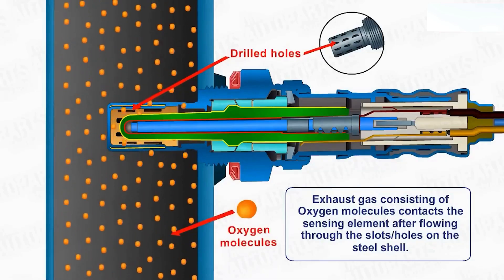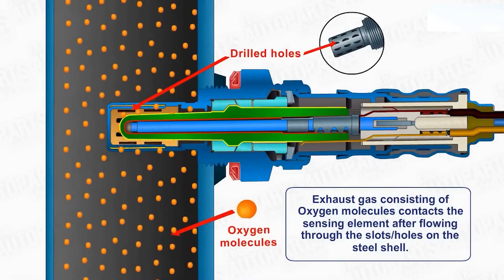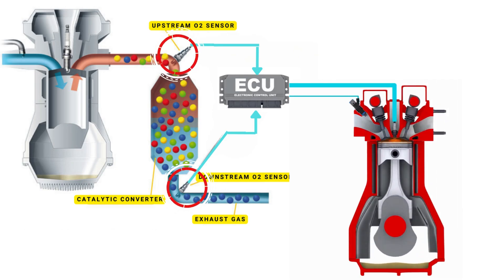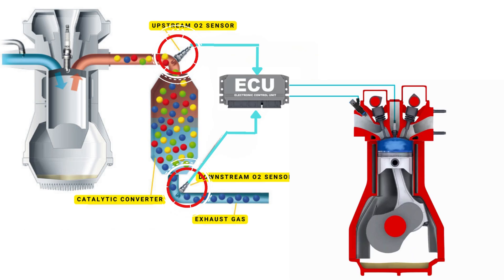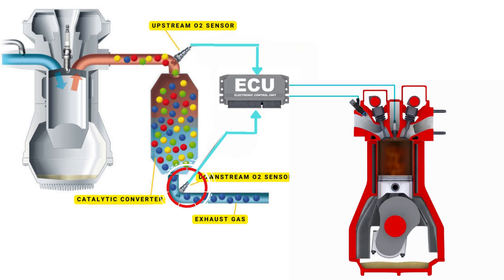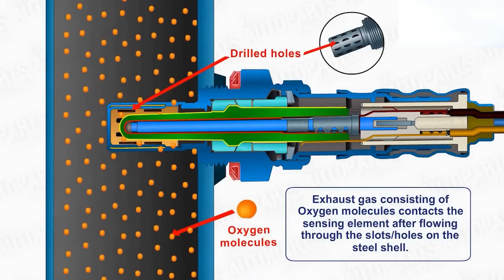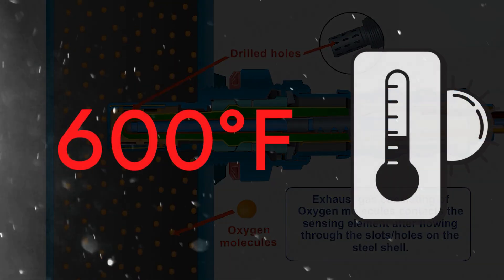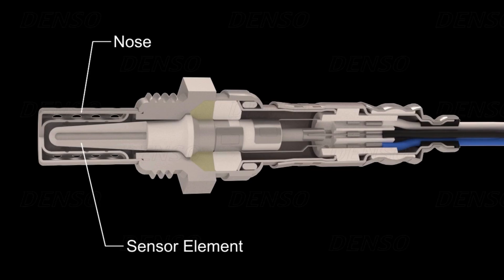Your vehicle's oxygen sensor plays a vital role in monitoring the oxygen content in the exhaust gases. It sends this data to the ECU, which then uses it to maintain the optimal air-fuel ratio. The ECU controls the air-fuel ratio by adjusting the timing of the engine's valves, allowing just the right amount of air and fuel to enter the combustion chamber. An oxygen sensor won't function correctly until it's heated to a certain temperature, around 600 degrees Fahrenheit for conventional sensors. That's where the heater circuit comes in — it's designed to warm up the sensor quickly so it starts working sooner.